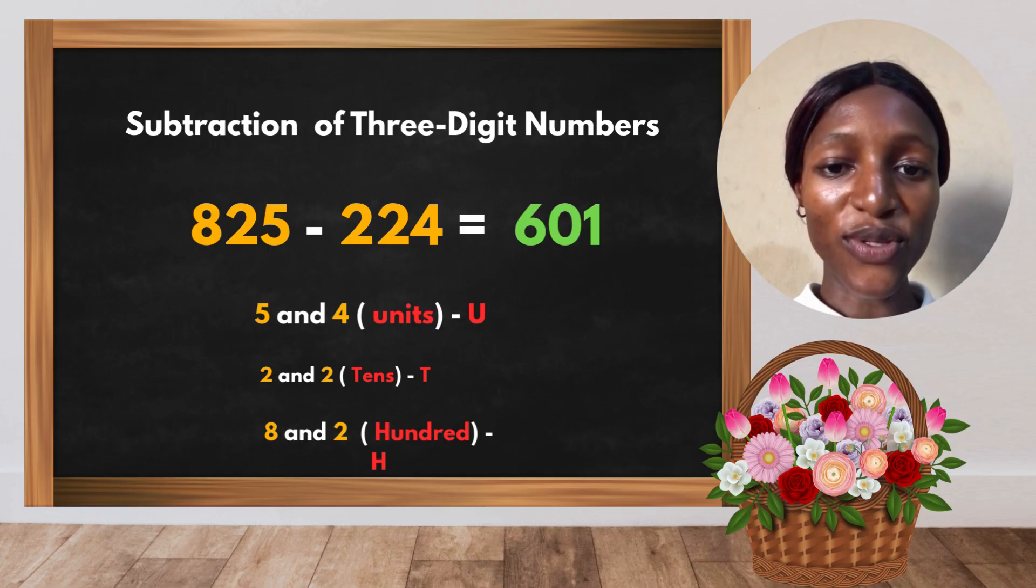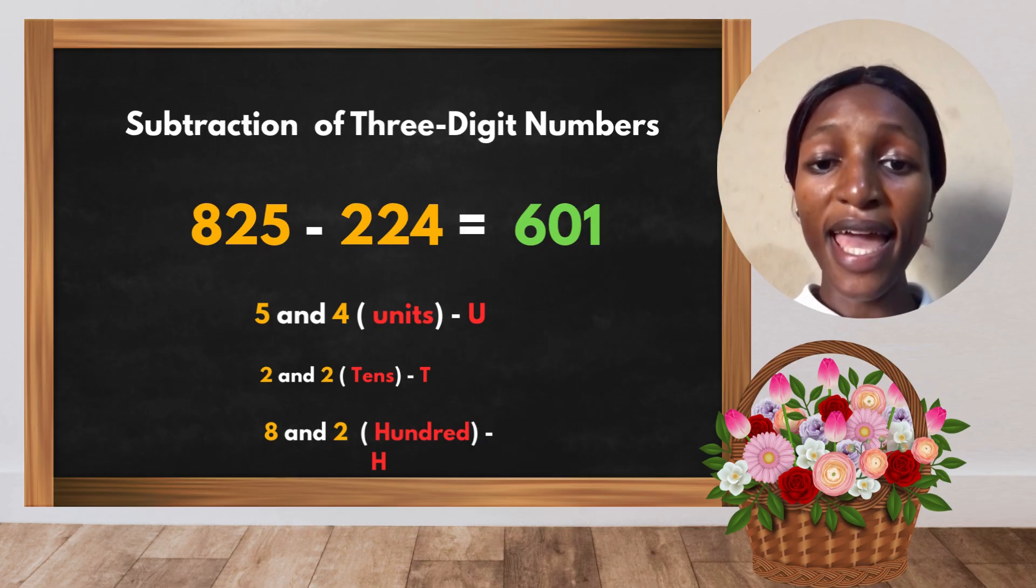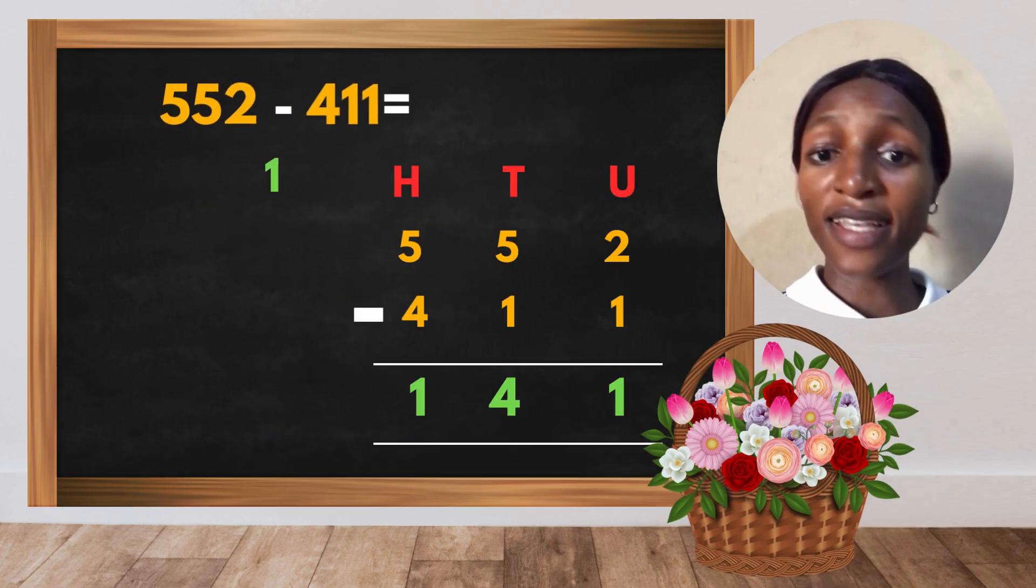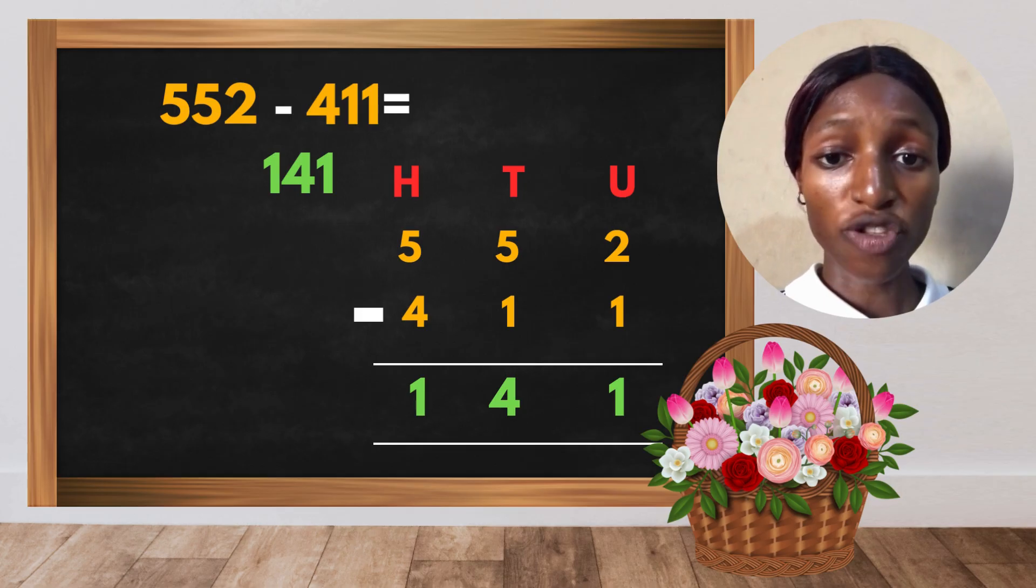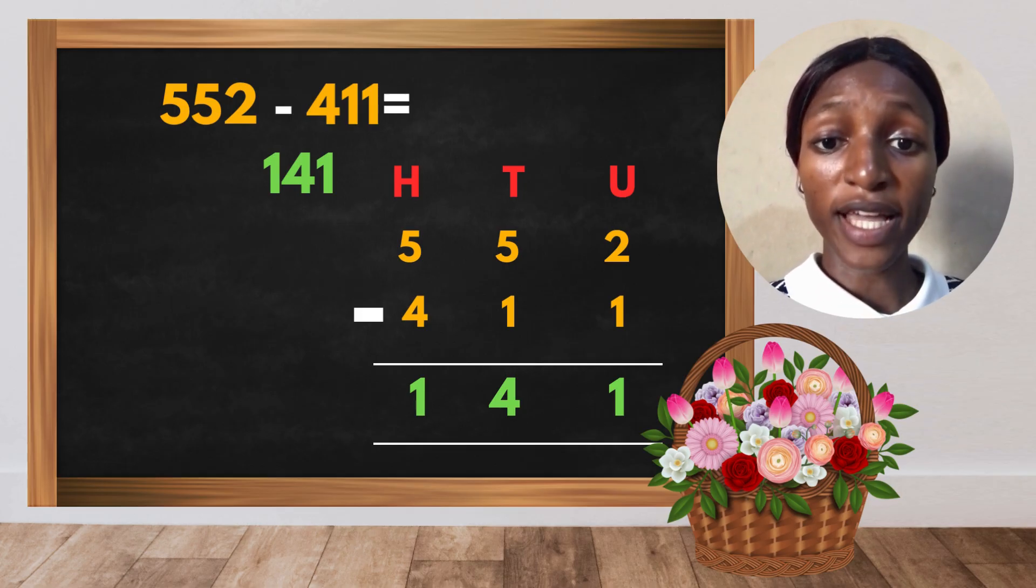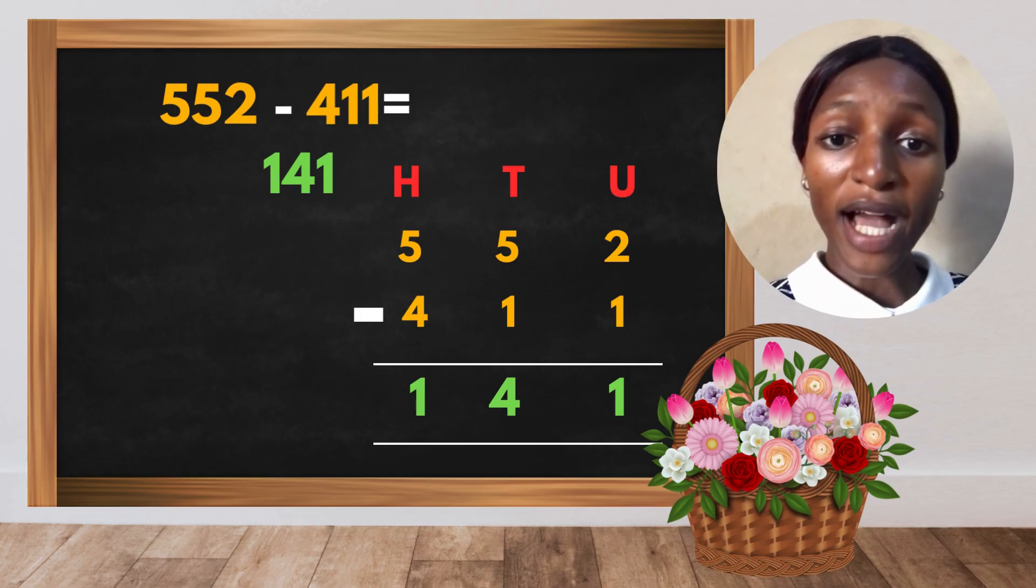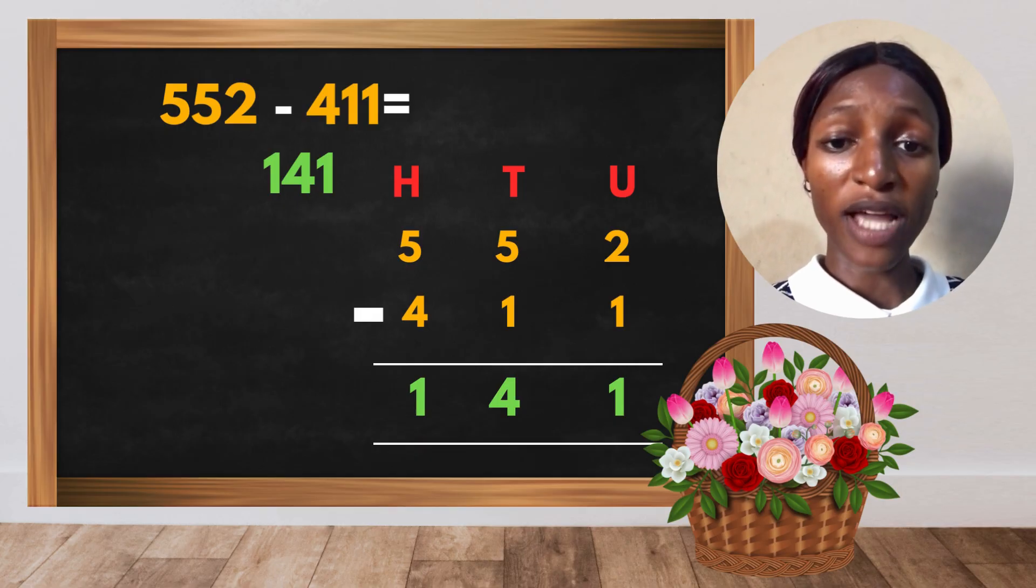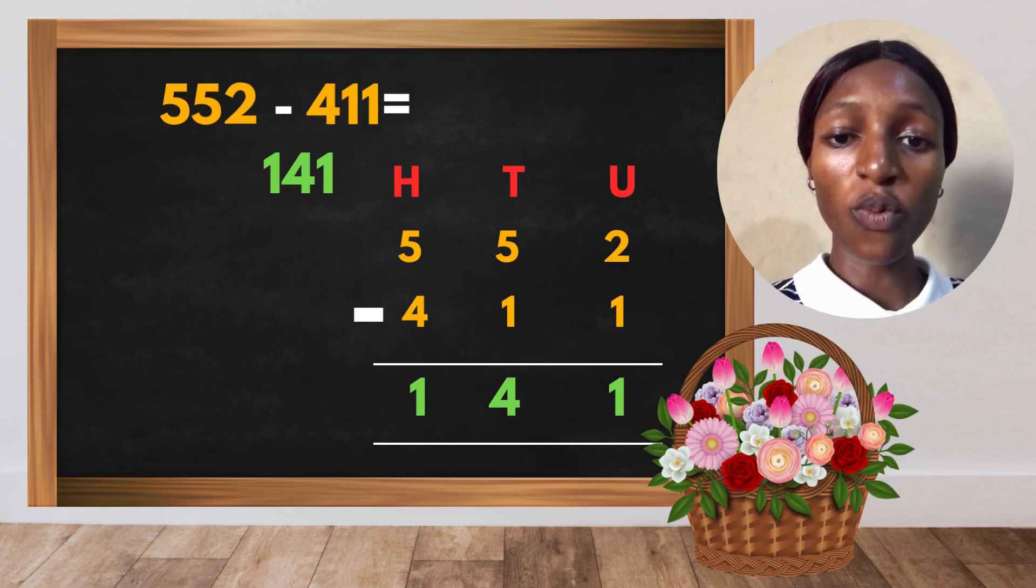So the answer is 601. And here is another example of a three-digit number subtraction: 552 minus 411. Look at the arrangement: hundreds, tens, and units. Starting from units: 2 minus 1 gives you 1, 5 minus 1 gives you 4, and likewise 5 minus 4 gives you 1. So your answer is 141.